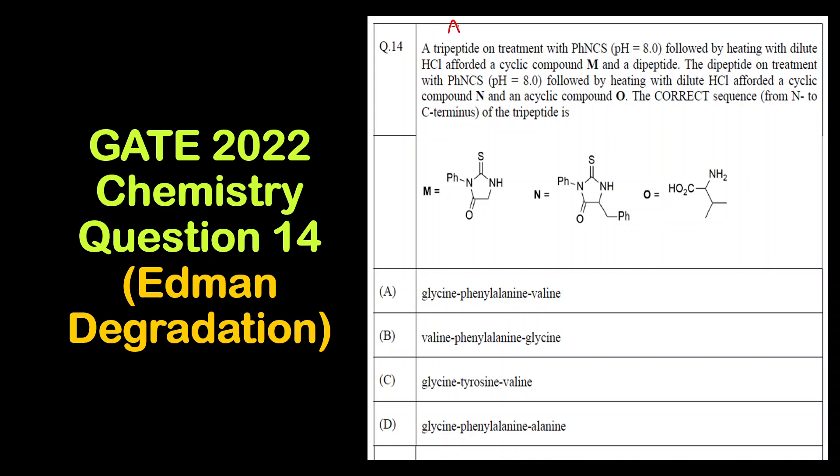A tripeptide - what is the meaning of tripeptide? It is a peptide chain containing three amino acids. It reacts with PHNCS, that is phenyl isothiocyanate, followed by heating with dilute HCl. First we get this cyclic compound M and a dipeptide. Then the dipeptide again undergoes the same reaction with phenyl isothiocyanate or PHNCS and heating with dilute HCl to form another cyclic compound N and an open chain structure O. We have to find out the correct sequence from N to C terminals.